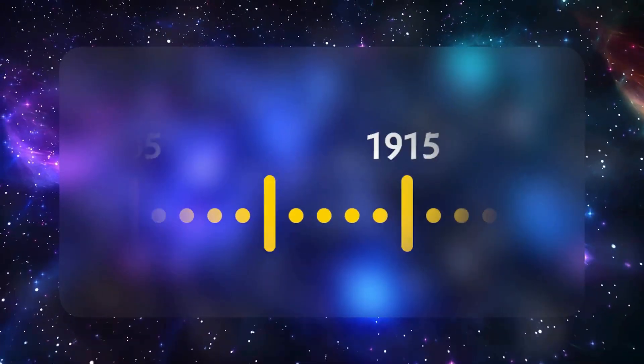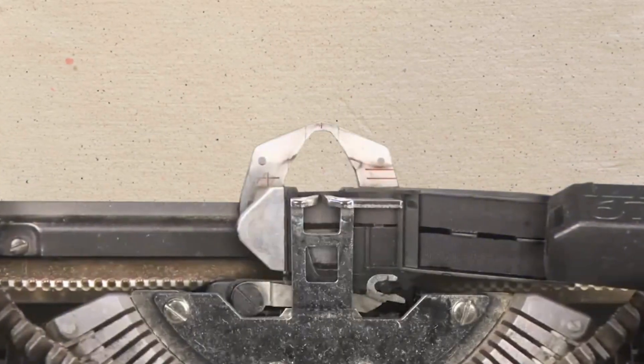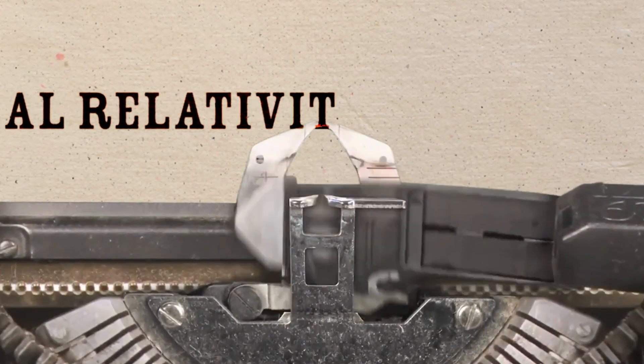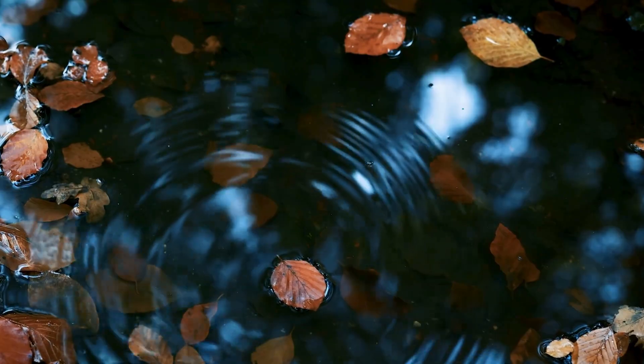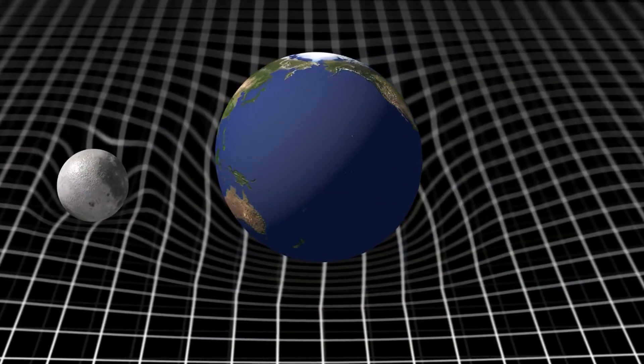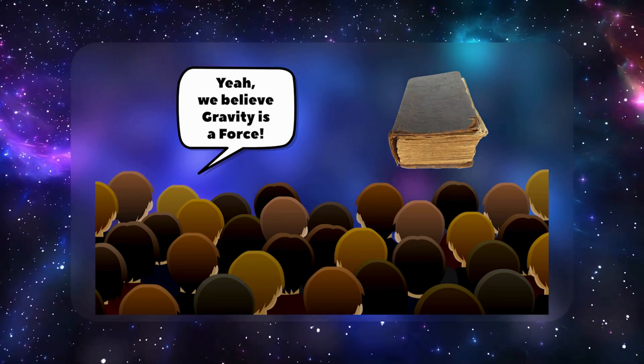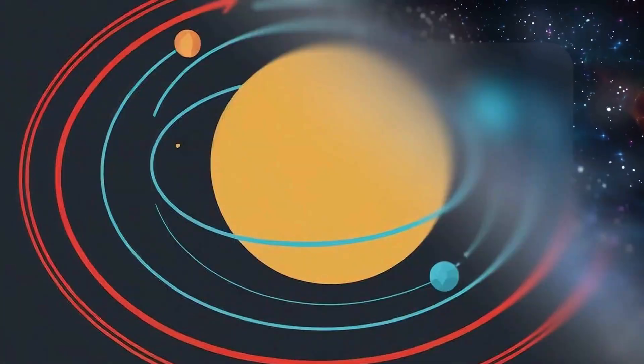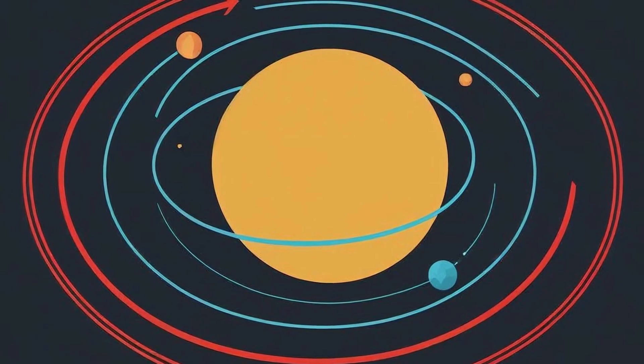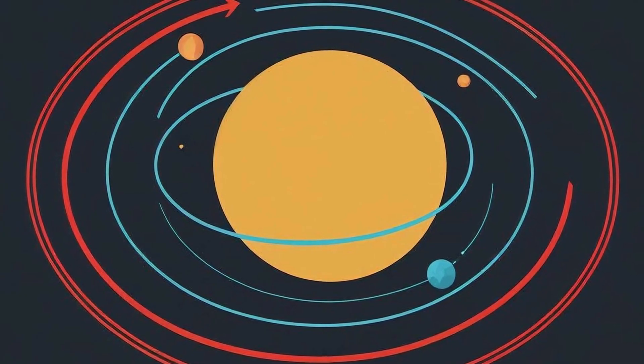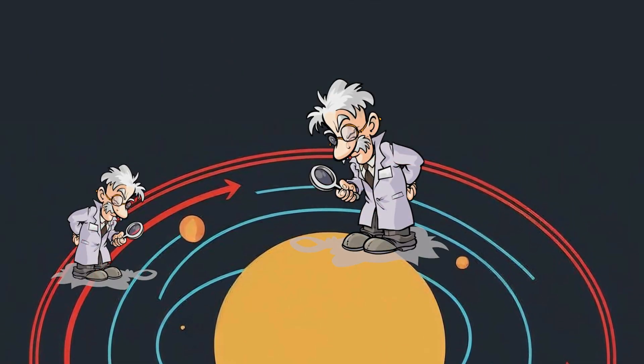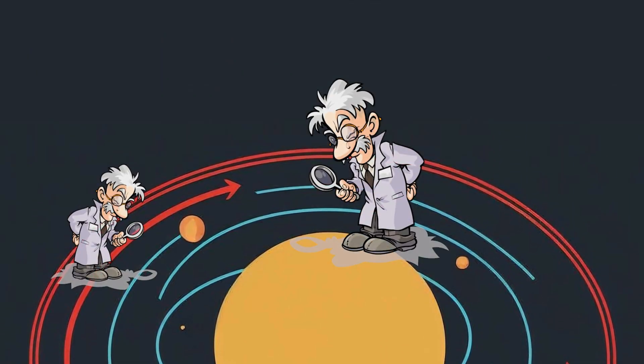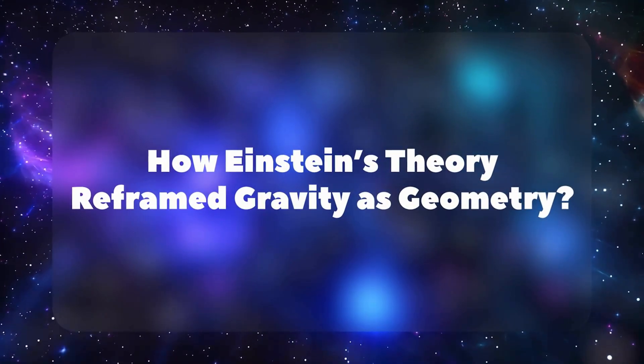But the real fireworks came a decade later in 1915, when Einstein published his theory of general relativity, revealing that gravity wasn't a mysterious force pulling objects. It was the result of curved spacetime. For over 200 years, Newton's story of gravity had been the sacred text. And now someone comes along and says, that invisible force? Actually, it's not a force at all. But Einstein had conviction. His new equations perfectly explained Mercury's funny orbit. And soon, scientists sought more ways to test this radical new viewpoint. That sets the stage for our topic today: how Einstein's theory reframed gravity as geometry itself.